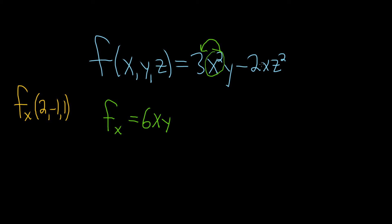And then here, the derivative of x is 1. And then this 2z squared is just a constant, it just stays there. So this is just minus 2z squared. And the x goes away, because it just becomes a 1.